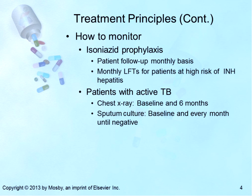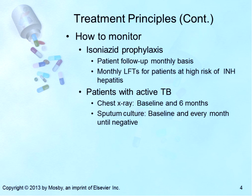For isoniazid prophylaxis, see patients on a monthly basis. Ask about signs and symptoms of liver damage or other toxic effects such as anorexia, nausea, vomiting, fatigue, weakness, new and persistent paresthesias of the hands and feet, persistent dark urine, icterus, rash, or elevated temperature. Obtain routine LFTs monthly for patients at high risk for developing INH hepatitis — those older than 35, daily drinkers, those on other hepatotoxic medications, and those with a history of liver disease. Discontinue INH immediately if the patient develops signs or symptoms of toxicity.